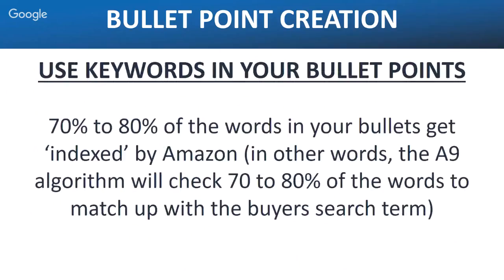Regarding the A9 algorithm and bullet points: based on testing, 70 to 80 percent of the words in your bullet points do get indexed by Amazon. The algorithm will check 70–80% of your keywords in bullet points to match up with a buyer's search term. The title is 100% indexed, bullet points are 70–80%. Make sure you're using keywords in your bullet points.